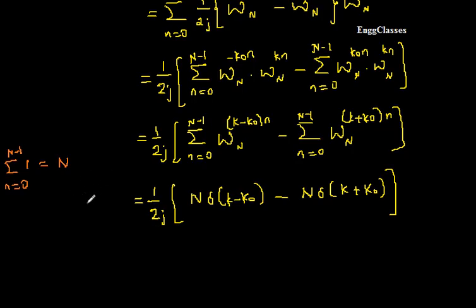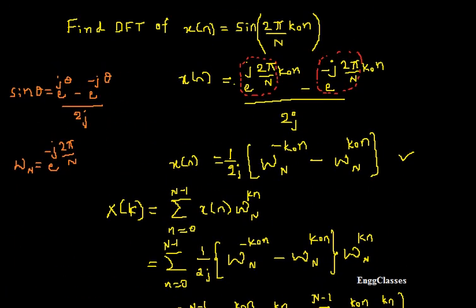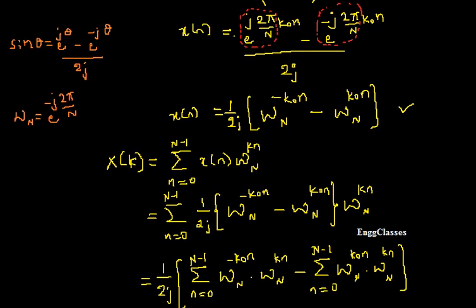Both conditions are satisfied. So ultimately x(k) = (1/2j) · [N · δ(k − k₀) − N · δ(k + k₀)]. This is the DFT x(k) of the given signal x(n) = sin(2π/N · k₀ · n).